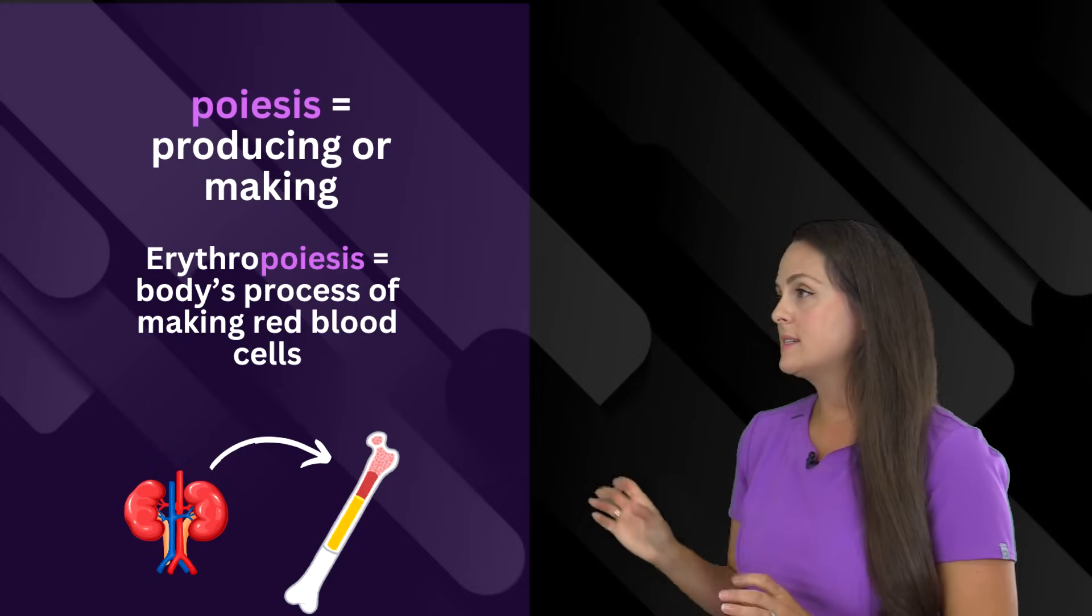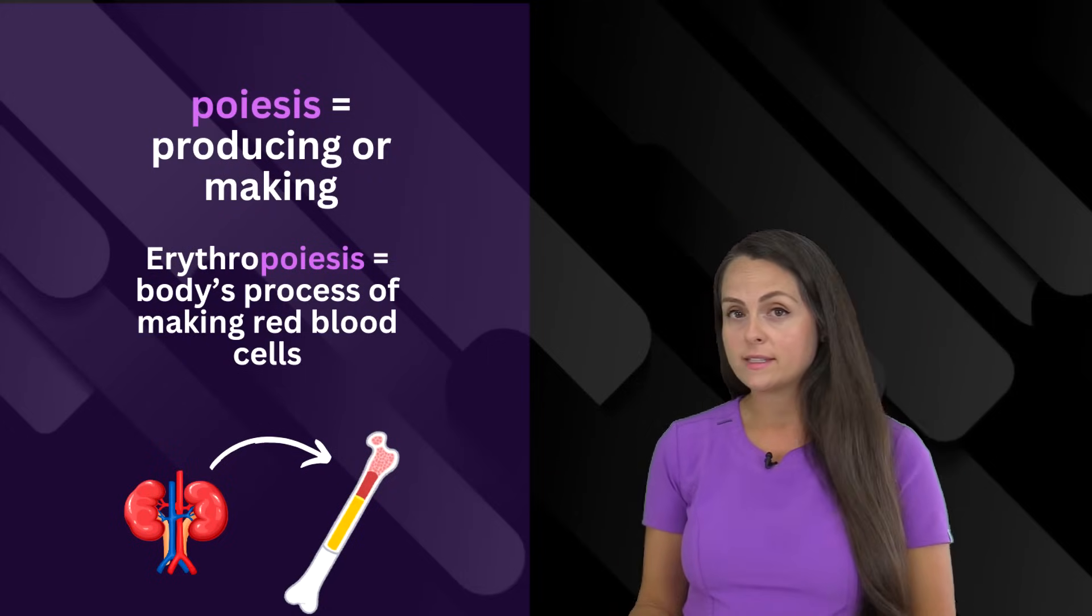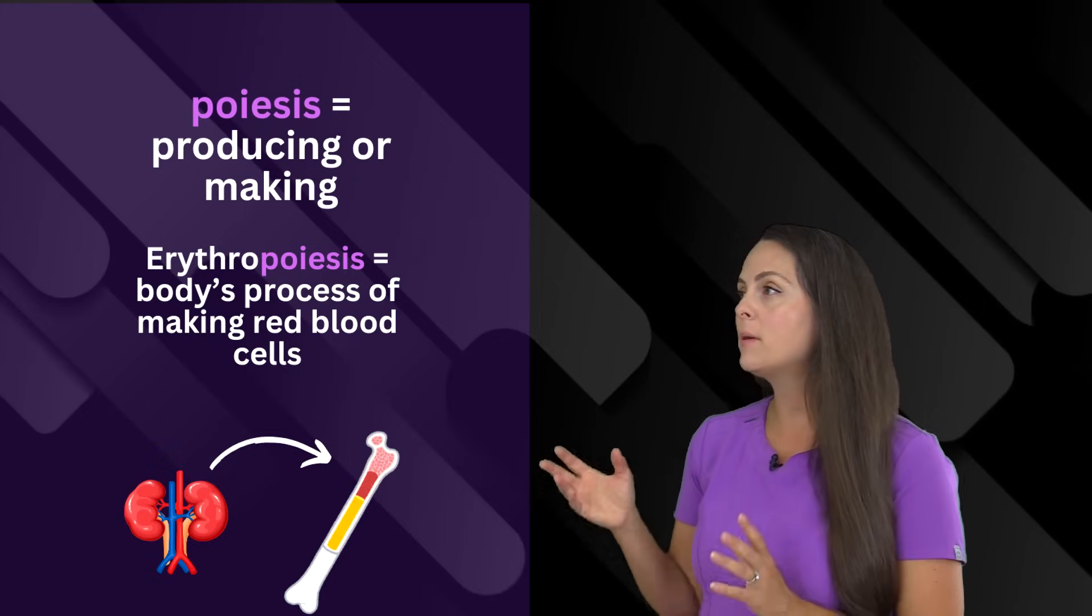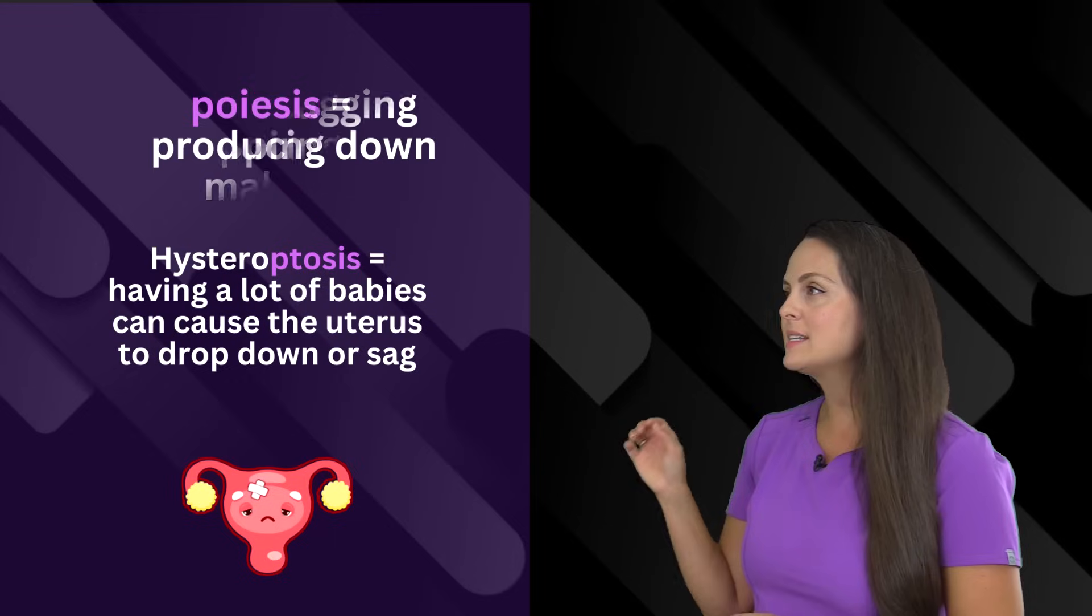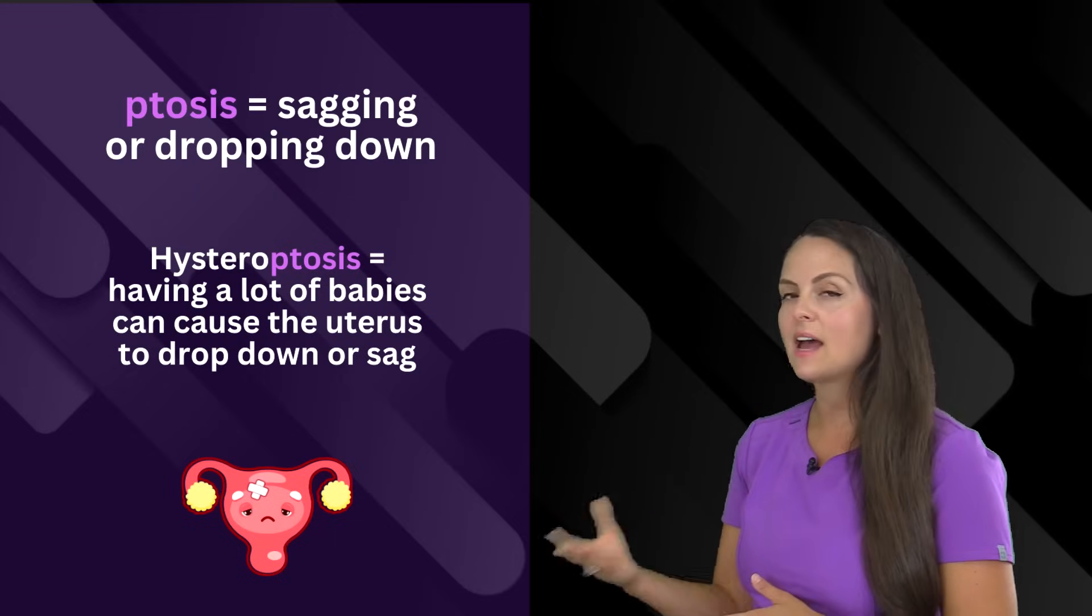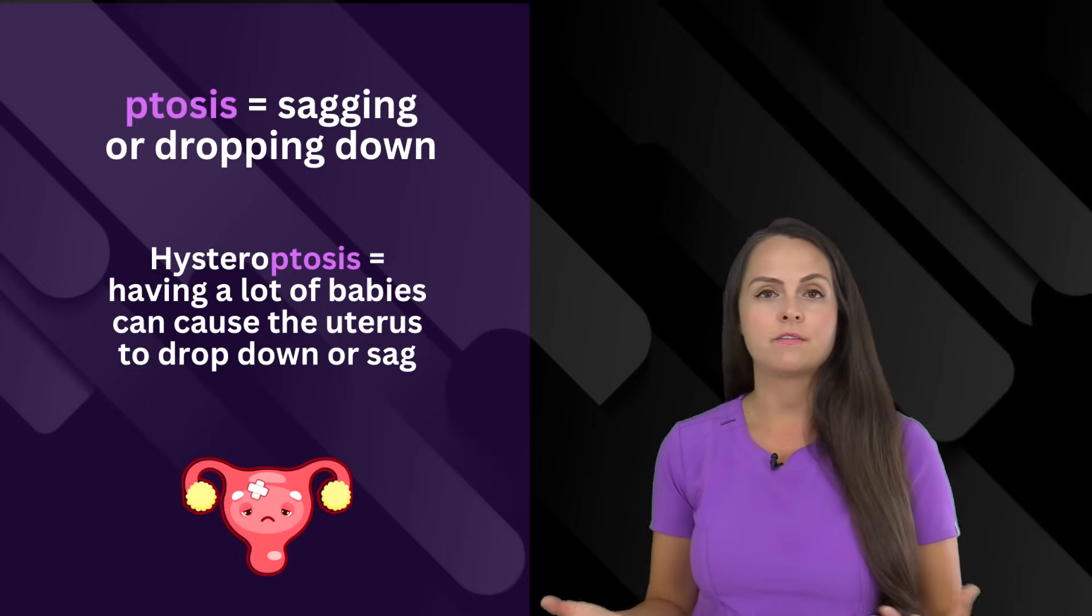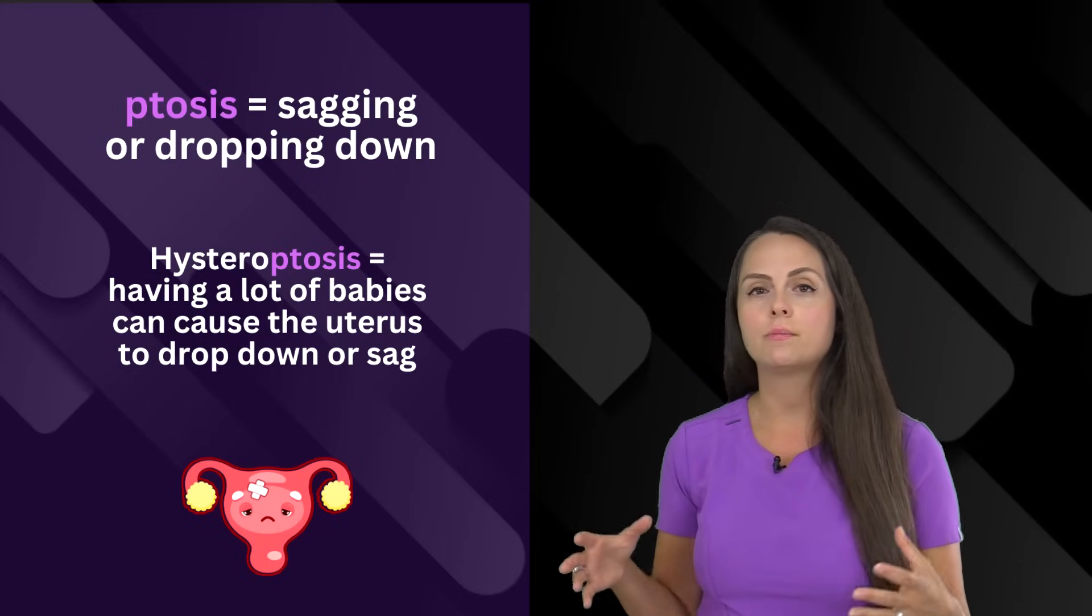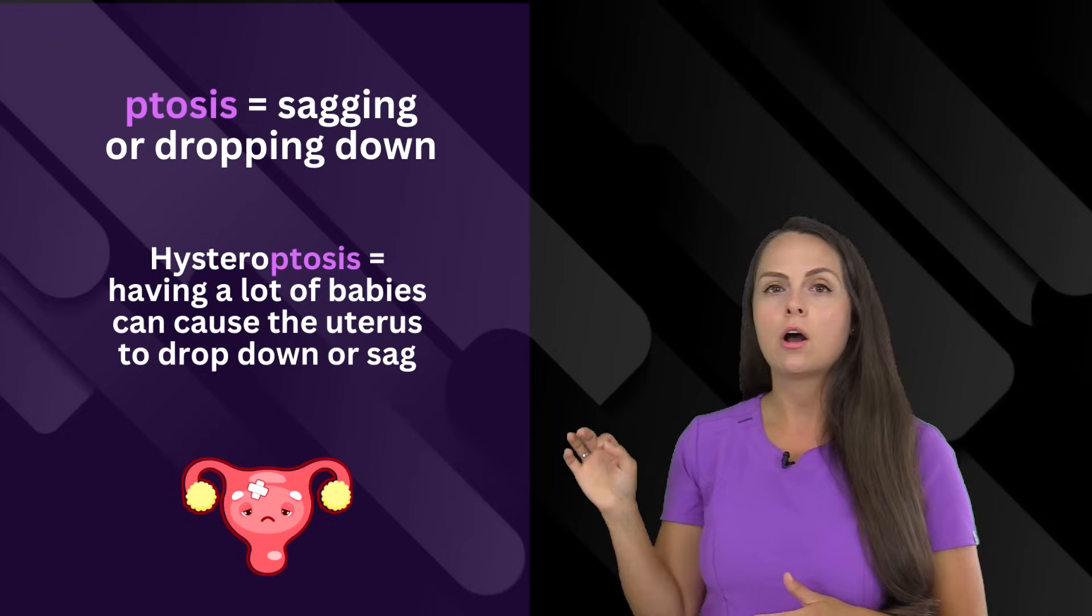Next is poiesis. This means to make or produce. Whenever you hear the term erythropoiesis, that means that we're talking about the body's process of making red blood cells. Next is ptosis. This means sagging or dropping down. Whenever a person has a lot of babies, this can have a profound effect on the uterus, causing it to drop down over time. When this occurs, we call it hysteroptosis.